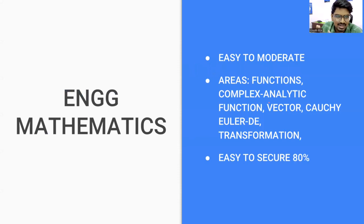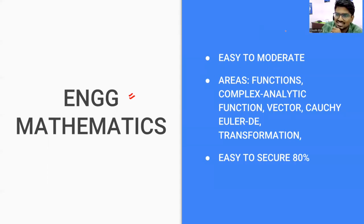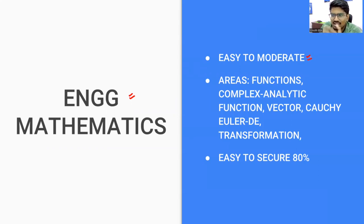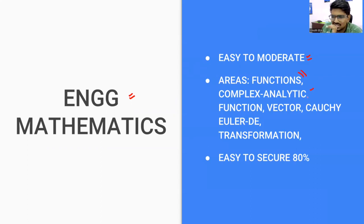The first subject is Engineering Mathematics — a very important subject. The question levels are not very tough, to be honest. Many questions are repetitive in nature compared to previous year papers. There is a question involving modulus functions, which is a good question. Complex variables had a question on analytical functions — very basic. Vectors had a question related to surface/line integrals — very simple.